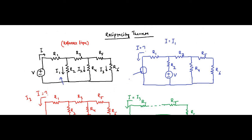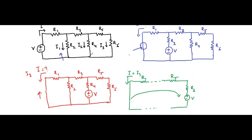However, you cannot say that the currents in the other branches will stay the same — they might differ. When the voltage source is in the first branch, the current in that initial branch is I1, but there is no guarantee that the currents in the second and third branches will remain I2 and I3. The only guarantee is about the branch where the voltage source was initially present. The other branch currents will generally be different.